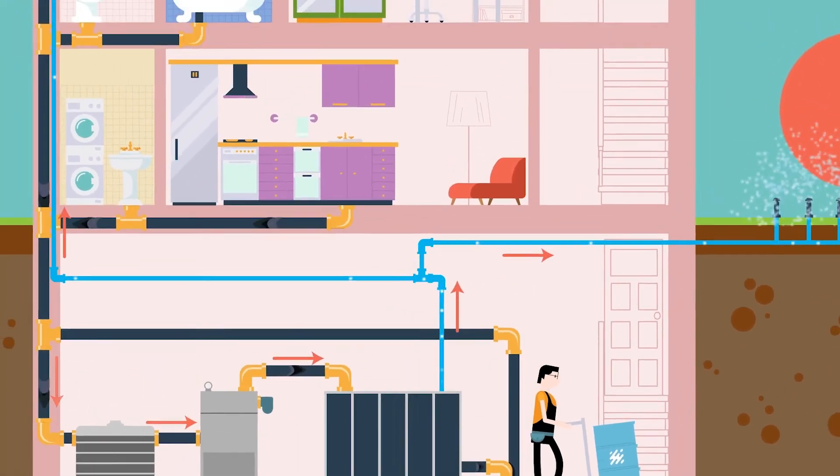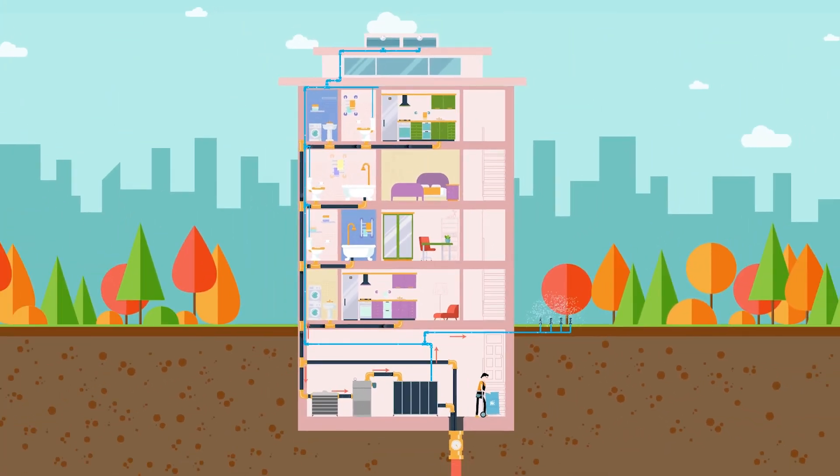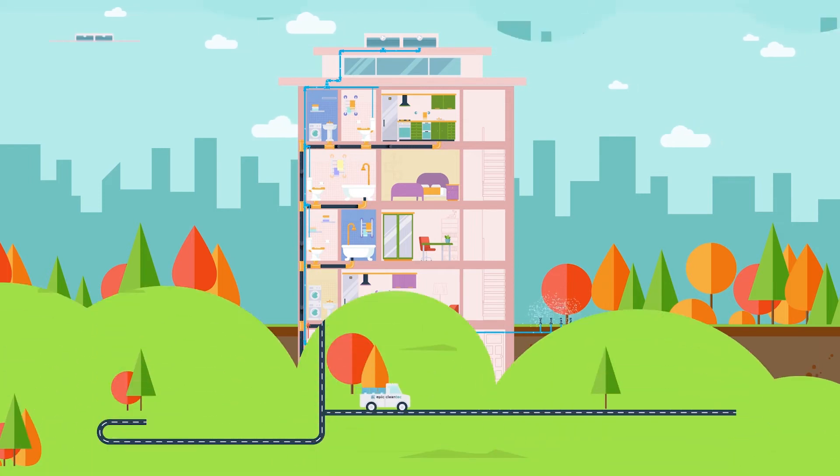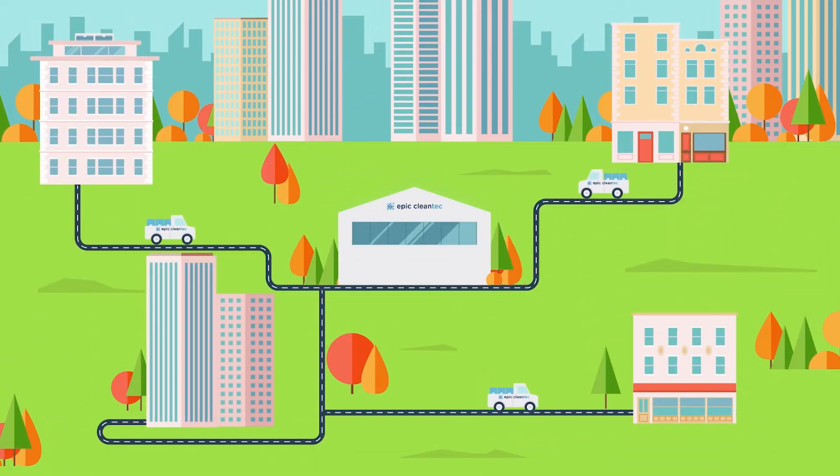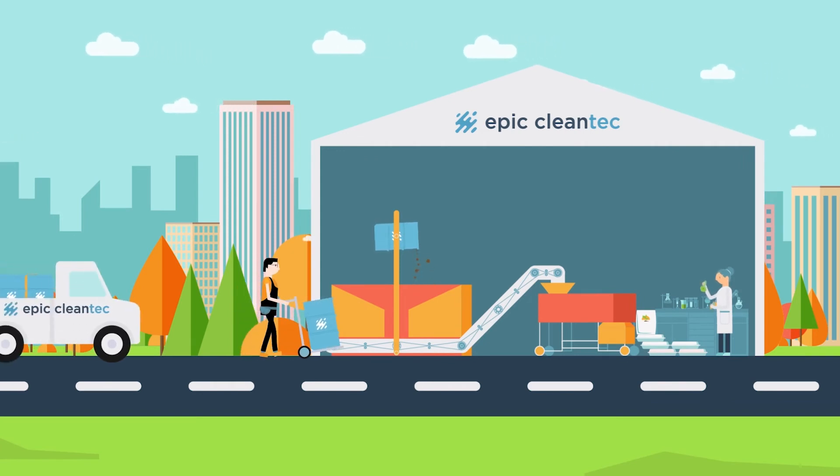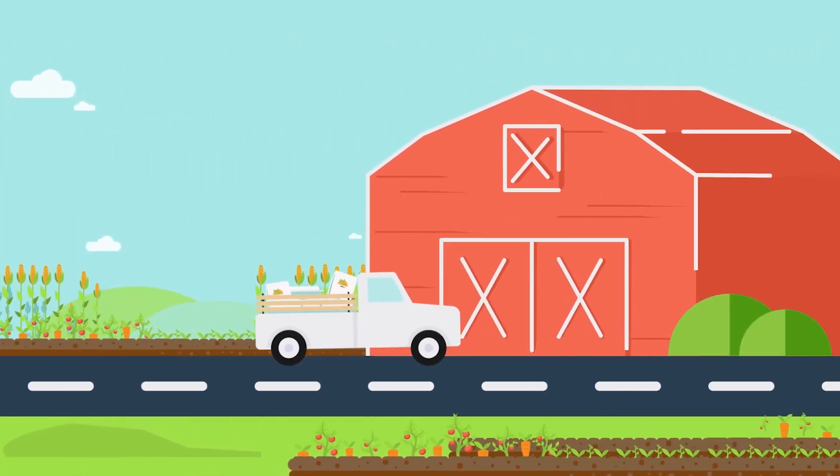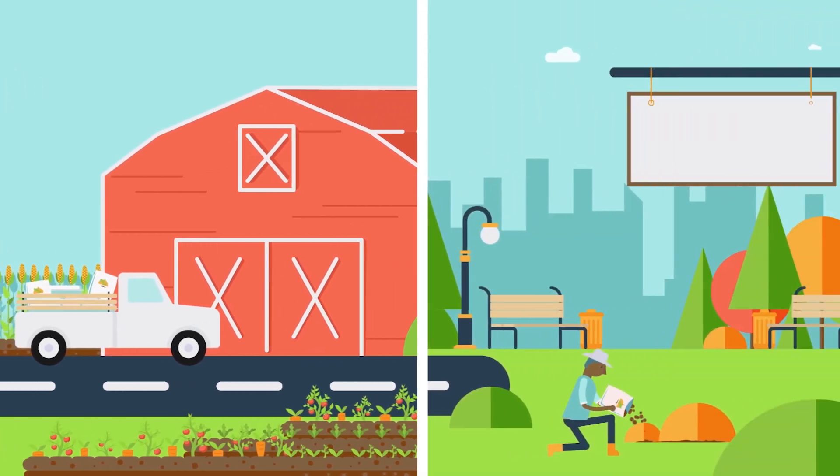The water that remains can then be purified and reused in the building for things like flushing toilets or watering lawns. Once full, these bins are transported to a local Epic Hub where waste is converted into high-quality, endlessly renewable, carbon-rich soil that can be used to grow crops, enhance gardens, and beautify green spaces.